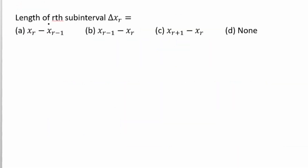The first question is: what is the length of the R-th sub-interval, delta x_r? Delta x_r equals x_(r+1) minus x_r. So here option number C is the correct answer.